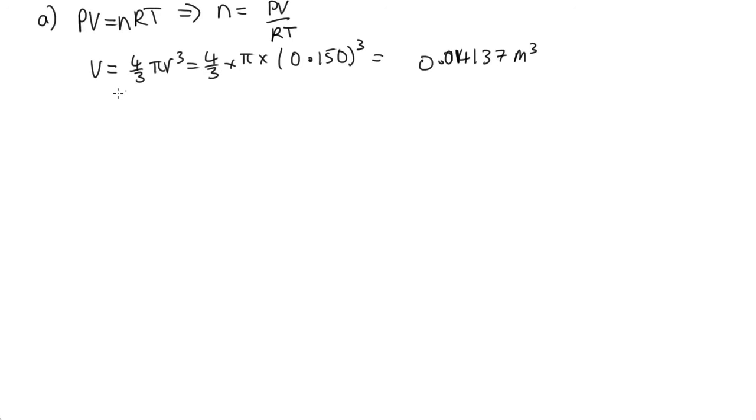And now we can just substitute into this equation for n. So n is equal to P, which was 1 atmosphere, 1.01 times 10 to the 5 pascals times 0.014137 over r, which is 8.314. And then we were told this was 20 degrees C. This needs to be in kelvins. So that's 20 plus 273.15 to convert from Celsius to kelvins.